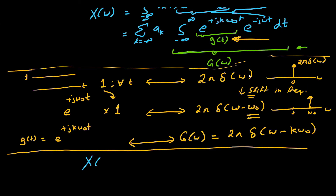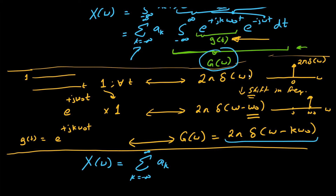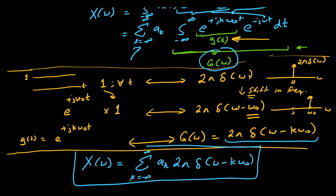Therefore, X(ω) is the summation over k of ak times 2π δ(ω − kω₀). This is the most important equation we wanted to derive: if you have any periodic signal and know its Fourier series coefficients ak, you simply multiply those coefficients by 2π δ(ω − kω₀) and sum them up to find the Fourier transform.